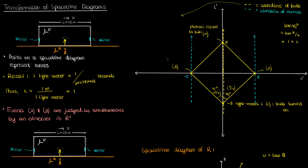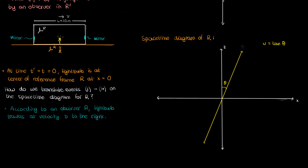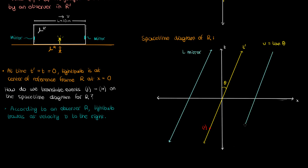In the r' spacetime diagram, the world line of the light bulb coincided with the t' axis. This means that the diagonal line drawn in the r frame represents the t' axis as seen by an observer in r. So event 1 will be somewhere on this diagonal line. The world lines of the two mirrors are also diagonal and parallel to the bulb's world line — they have the same slope but are displaced to the sides, with the left mirror's world line on the left and the right mirror's on the right.